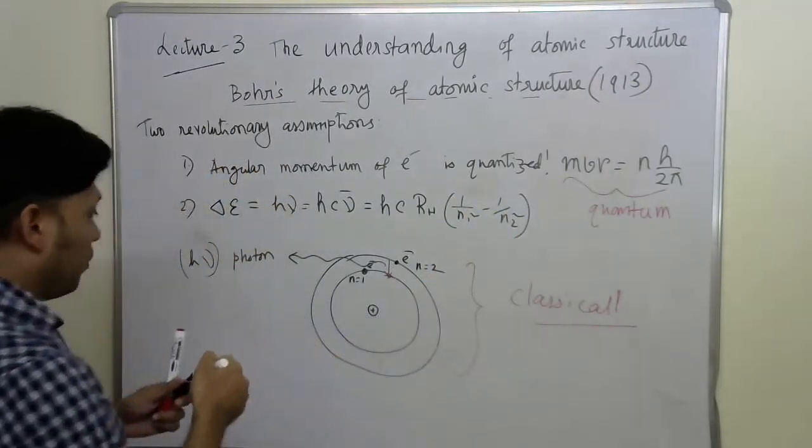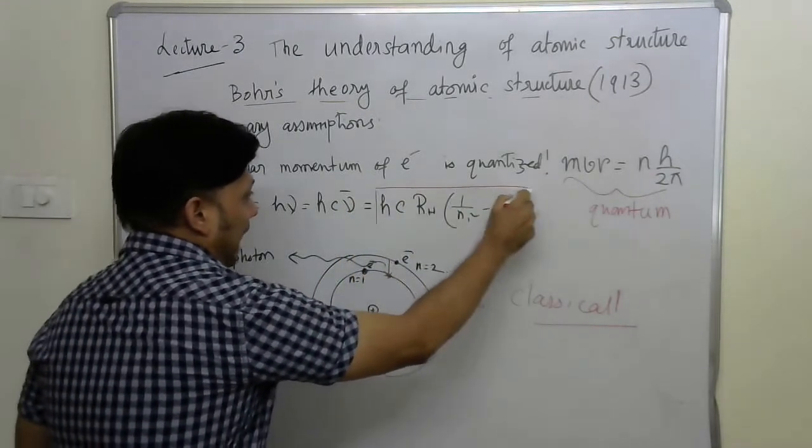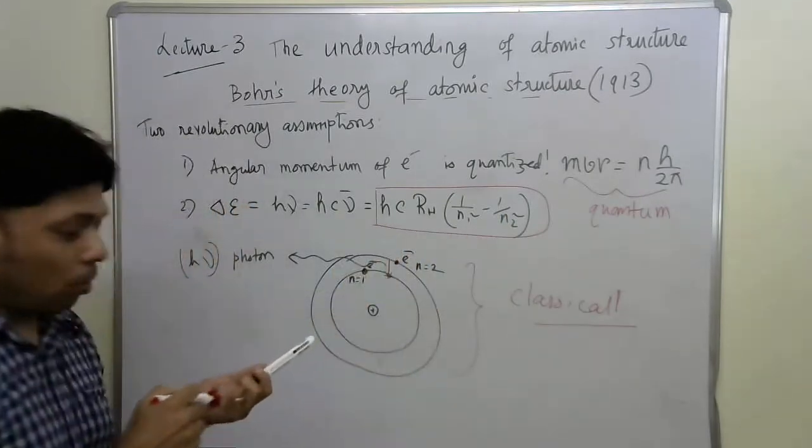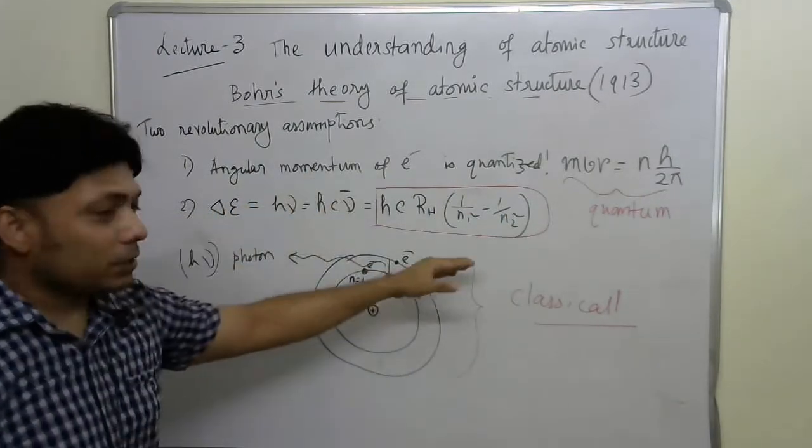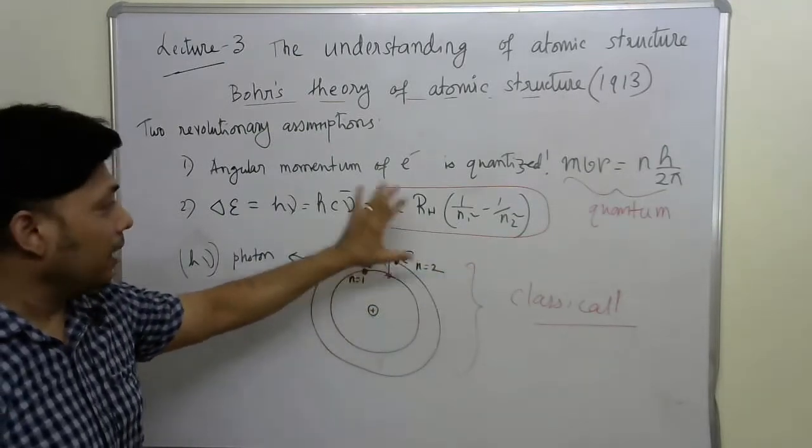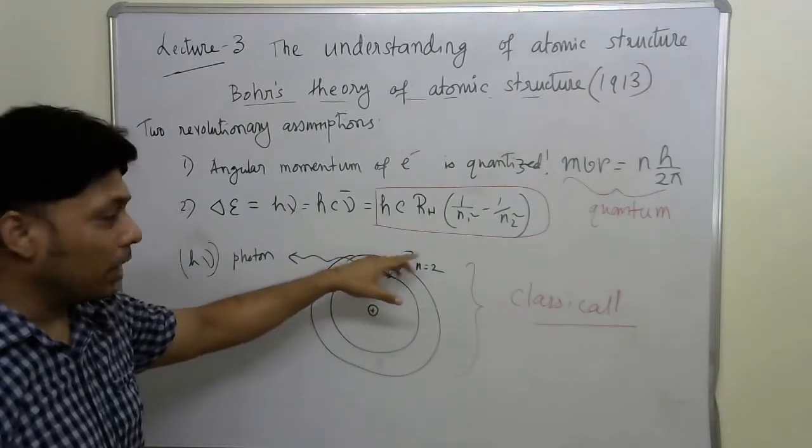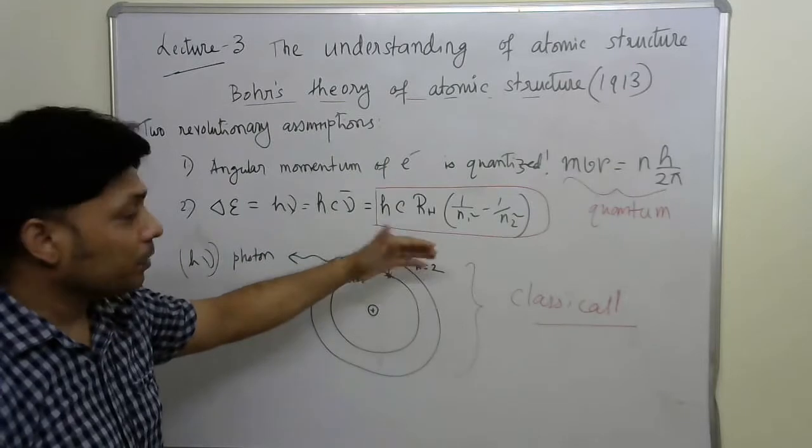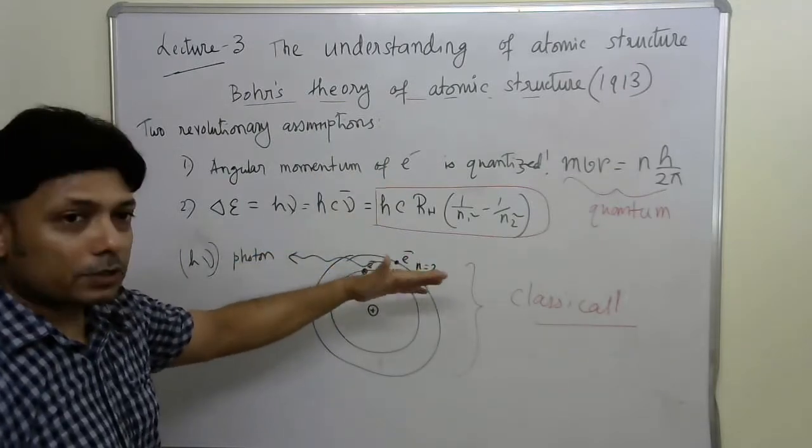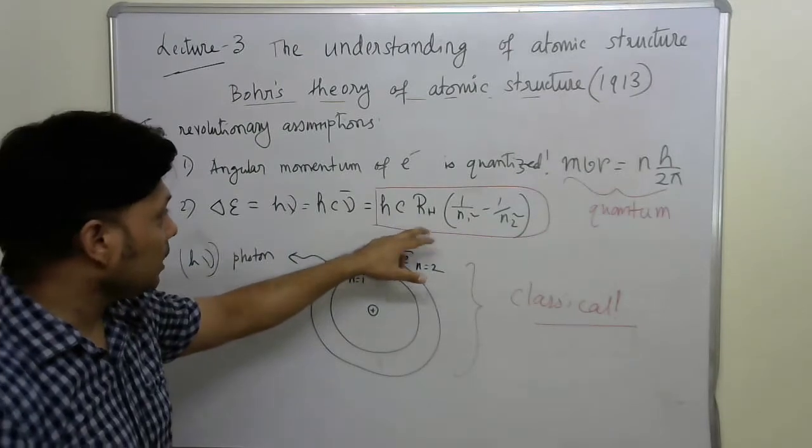Then this equation becomes h c nu bar and this nu bar can be exactly replaced by the Rydberg's constant. Now, the beauty of this equation is whatever the calculation proposed by Niels Bohr, independently that equation appeared and it ultimately matched with the Rydberg's empirical formula. The Rh here, this was scientifically validated by Niels Bohr's classical theoretical physics.